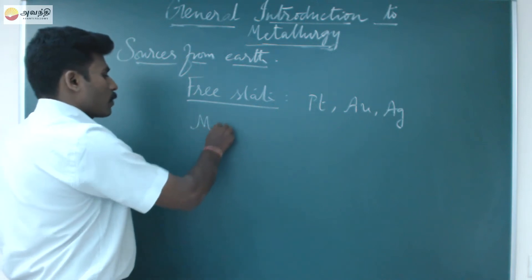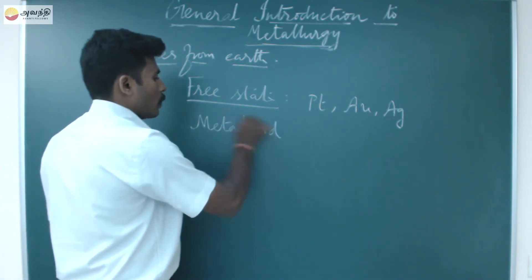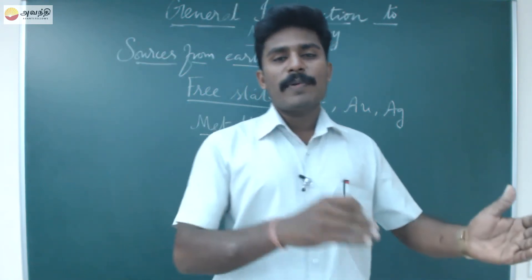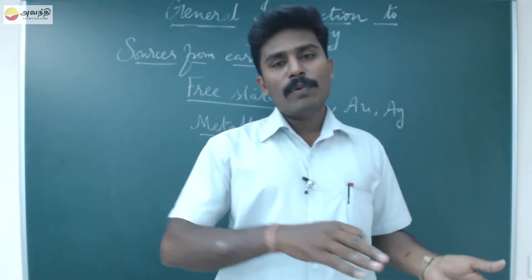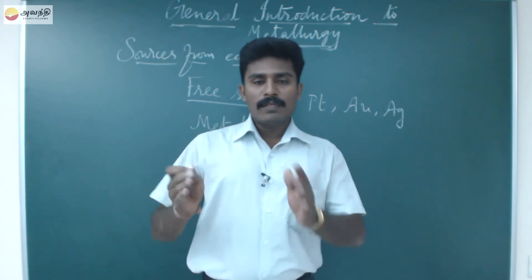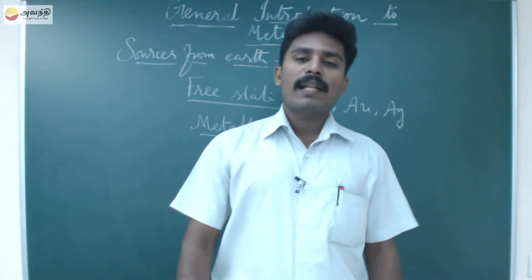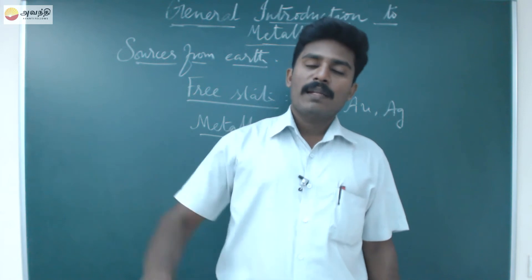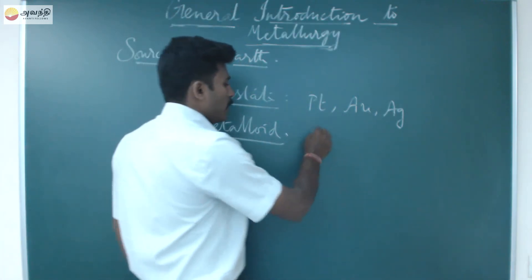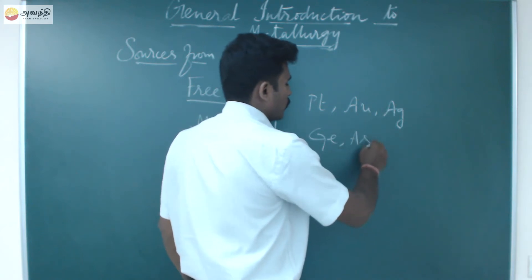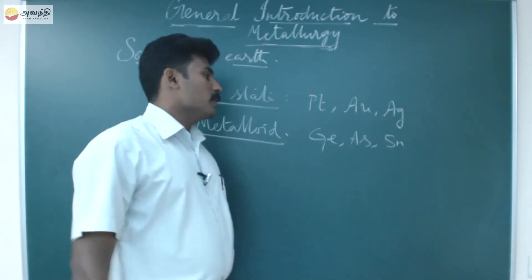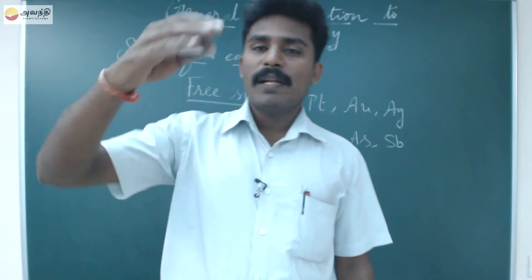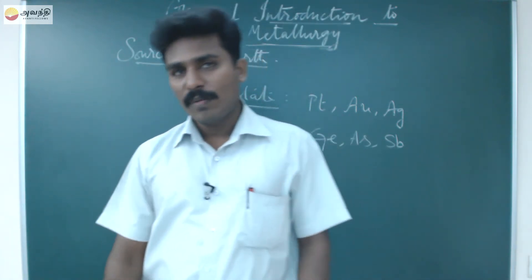Metalloid is a special category — these elements have both metal properties as well as non-metal properties. You can use either a metal property or a non-metal property. For example, germanium, arsenic, and antimony. Antimony's symbol is Sb, from the Latin name Stibium. Germanium, arsenic, and antimony are called metalloids because they have both metal as well as non-metal properties.